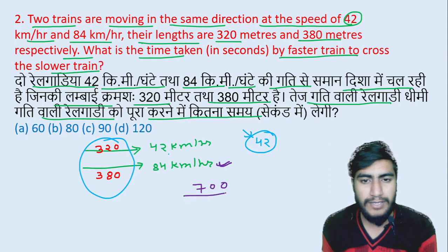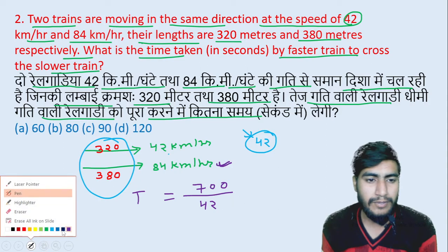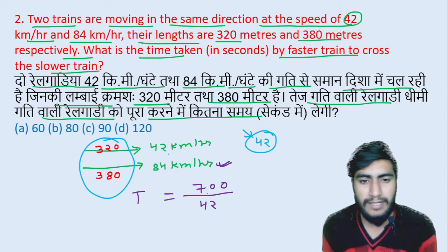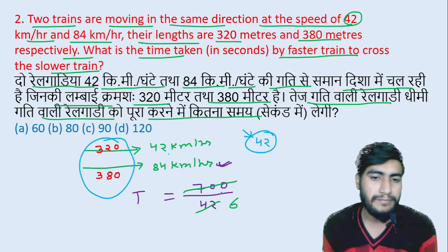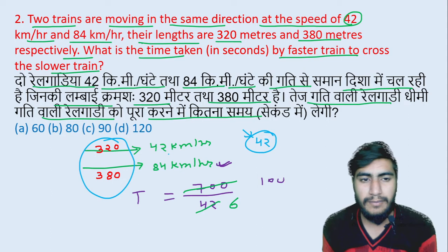Distance is 700 meters, speed is 42 km per hour, and we need to find time. Time is equal to distance upon speed. Calculating 700 divided by 42, simplifying: cancel to get 100/6, then further to 50/3.